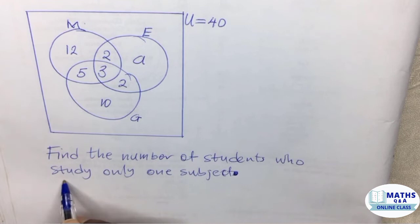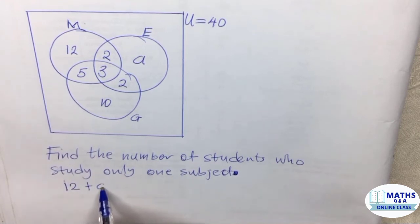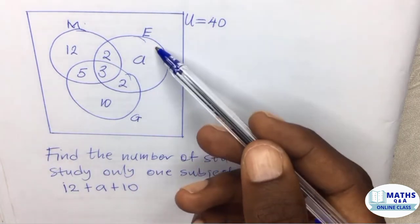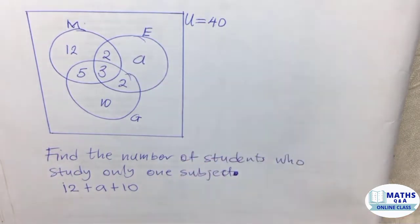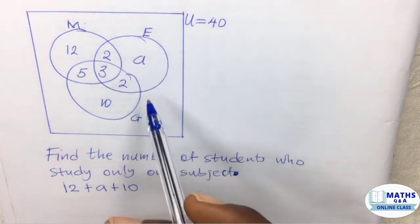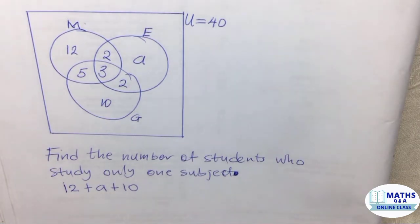If we want to find the number of students who study only one subject, that's going to give us 12 plus a plus 10. But we don't know those who study economics only, so that's what we need to find first before we can get our actual answer.